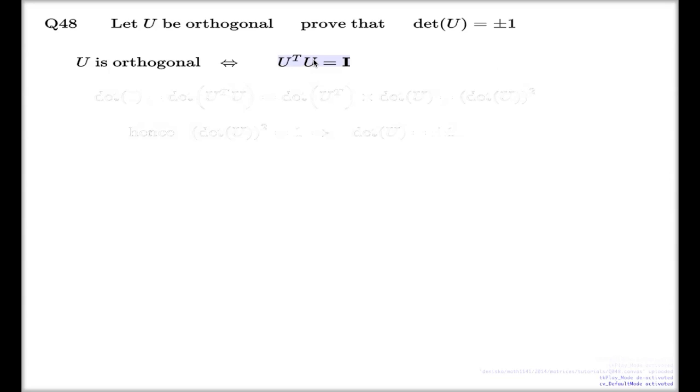Actually I should correct myself. I should say multiply both ways. That's the proper definition of the orthogonal matrix.